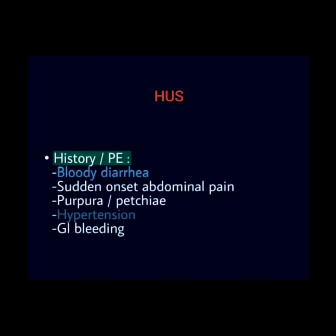History present in Hemolytic Uremic Syndrome includes: bloody diarrhea, sudden onset of abdominal pain, purpura or petechiae, hypertension, and gastrointestinal bleeding.